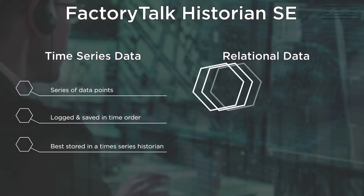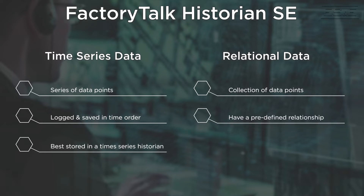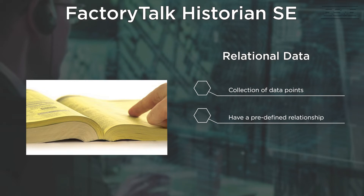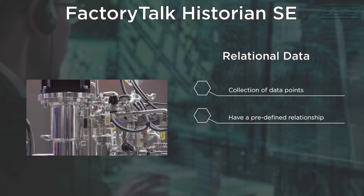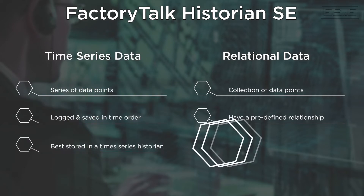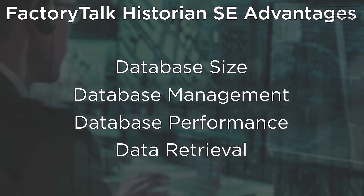Relational data is data that is collected for data points with a predefined relationship between them. An example of relational data is a phone book — when you have a name, a last name, an address, and a phone number. A typical query would involve listing all the contacts with a specific last name, area code, or zip code. Another example for manufacturing is recipe management, where each recipe is made up of many related ingredients. Relational data is best stored in a relational database. So let's take each one of these in turn.